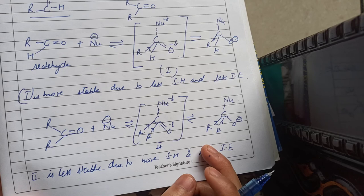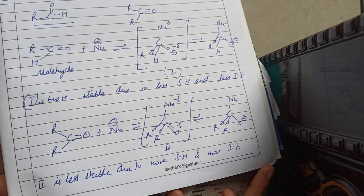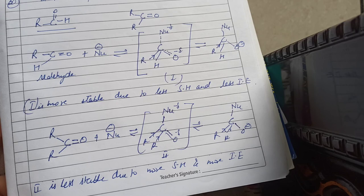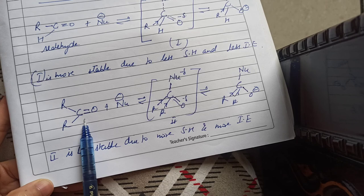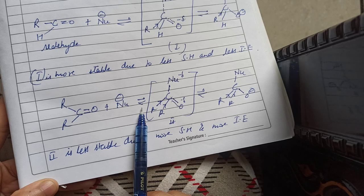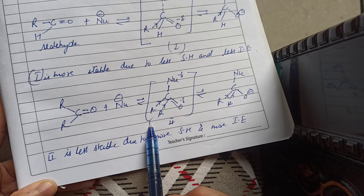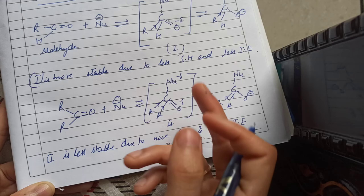Therefore, aldehydes are more reactive than ketones towards nucleophilic addition reactions. In aldehyde, the carbonyl carbon is attached to one hydrogen atom and one alkyl group; on the other hand, in ketones, the carbonyl carbon is attached to two alkyl groups. During nucleophile attack, carbonyl carbon transitions to become tetrahedral, and with larger alkyl groups, steric hindrance increases and stability of the transition state decreases.